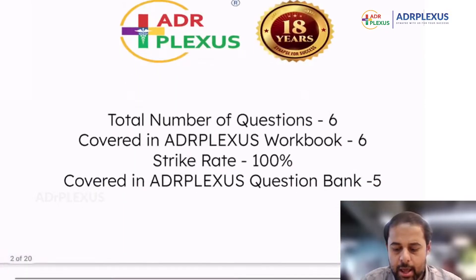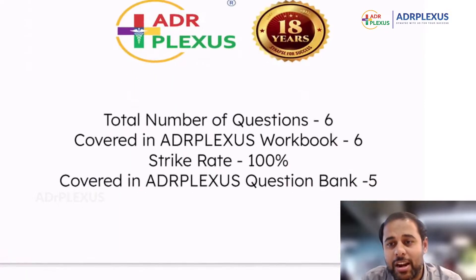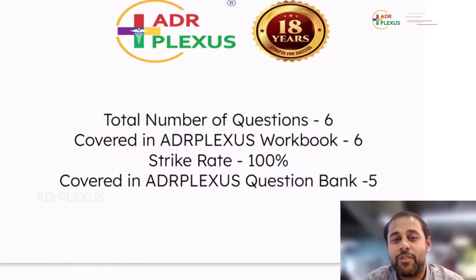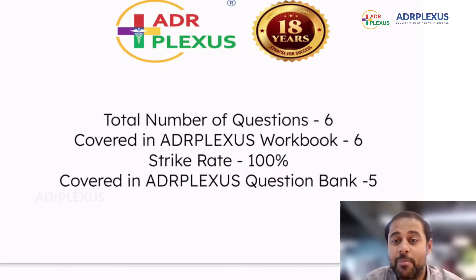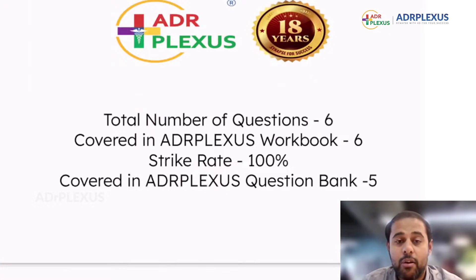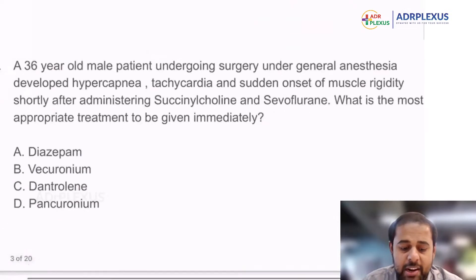There are overall total six questions, of which five are directly related to anesthesia, and one is related to orthopedic surgeries, which we have covered in the workbook. All the questions have been covered in the workbook, and from the area with this question, like five questions are there which directly simulate the topics, and also there are a few direct debates. So let's see the first question.